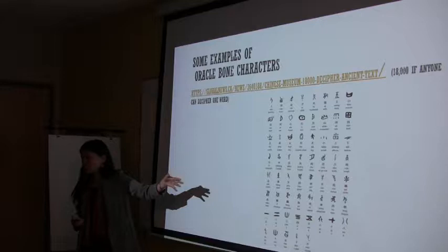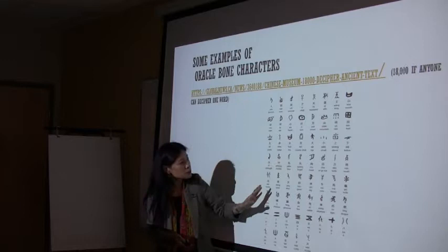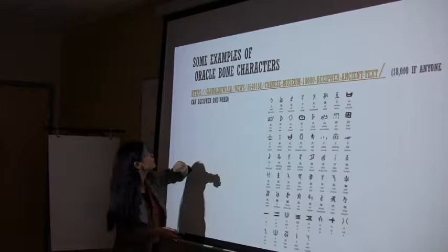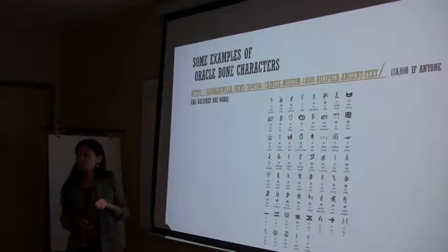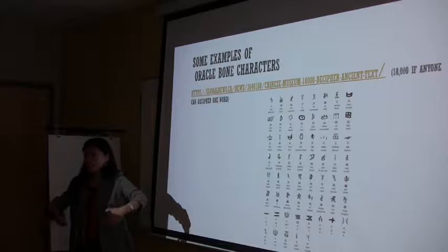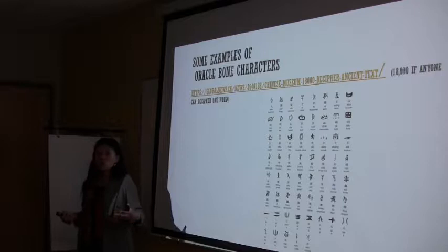These are some of the oracle bone scripts. You can see examples: person, human, ren, man, male, woman, child. I told you that if I could read and decipher oracle bones — we have 500,000 — what we can read is only about 4,500. The rest is still a mystery to human beings.